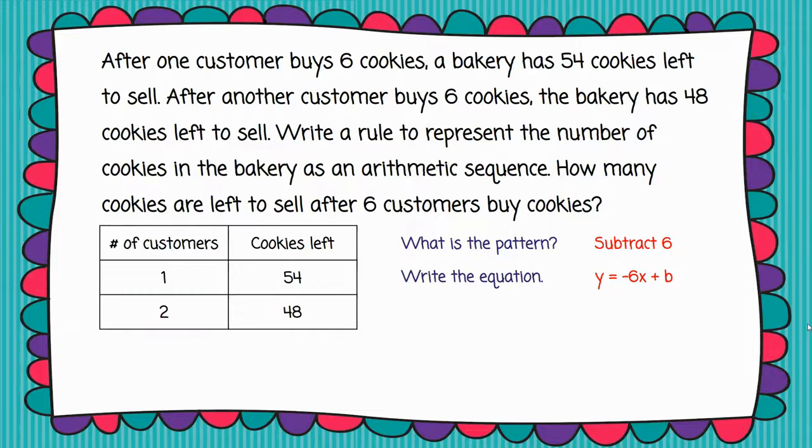Then I want you to notice that we have this plus b. Now some of you may be thinking, 'Oh I know what that is - that's the y equals mx plus b form,' and that's great. But even if you're not thinking that, that's okay. I want you to think of this b as a bonus amount, and we're just going to find that bonus amount to finish our equation.